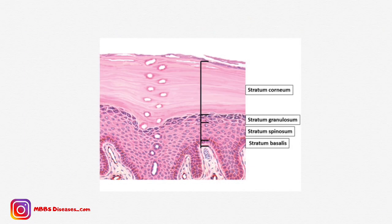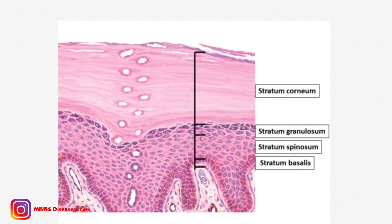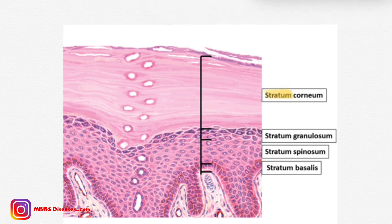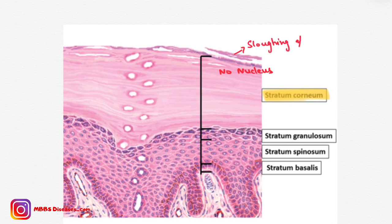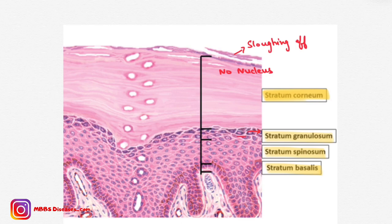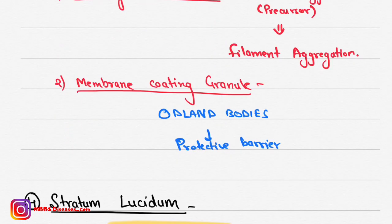This is the histology of the layers of skin. The topmost layer is stratum corneum — it has no nucleus and cells are sloughing off. Below that is stratum granulosum with a granular appearance, then the thickest layer stratum spinosum, and the lowermost layer stratum basale. Stratum lucidum is not visible here because this is not a slide from palm or sole skin.